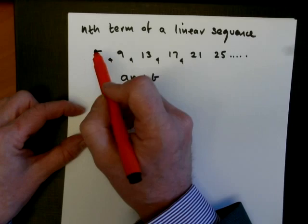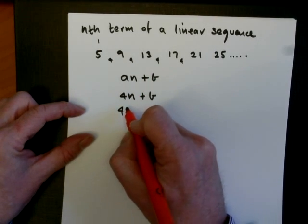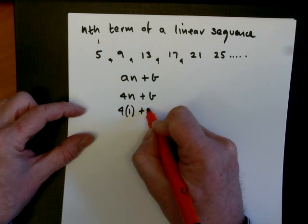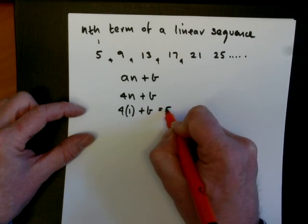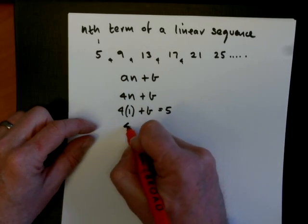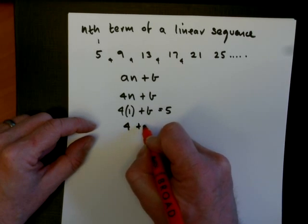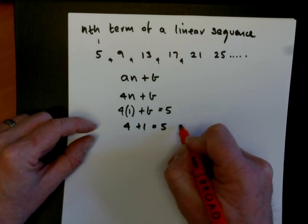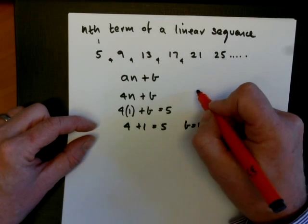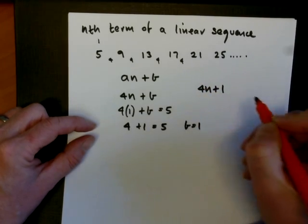Now, if we look at what is our first term, then if we replace n with 1, we've got 4 lots of 1 plus the b equals 5, because the first term is 5. So 4 times 1 is 4, so all I'm going to have to do to make 5 is add on 1. So the b is 1. So the nth term of this linear sequence is 4n plus 1.